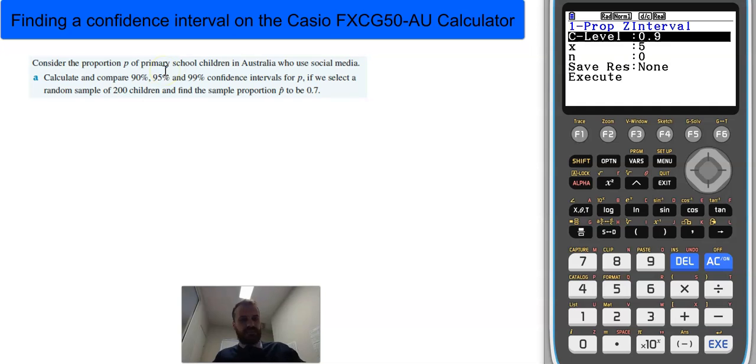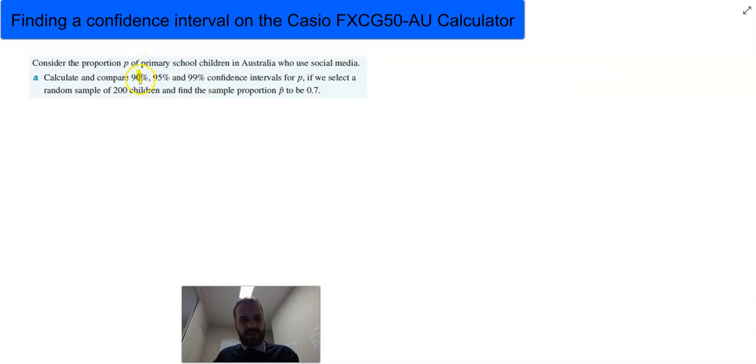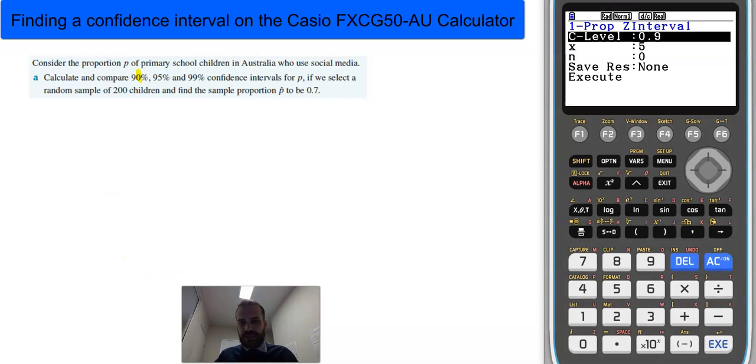Now, let's start reading this question. Calculate and compare 90%, 95%, and 99% confidence intervals. So, let's do the 90% confidence interval first. Going back into my calculator, 90% confidence interval.